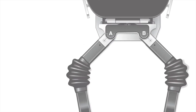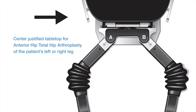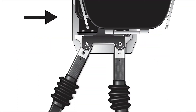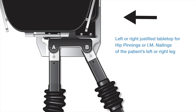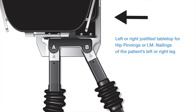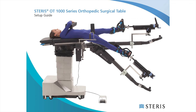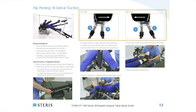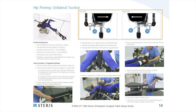The centered position is typical for anterior hip cases, whereas left justified or right justified positions are typical for an operative left or right leg fracture or trauma procedure, such as hip pinnings or IM nailings. Refer to pages 8 to 21 of the OT Table Setup Guide to verify the appropriate tabletop slide position shown in the illustrations.